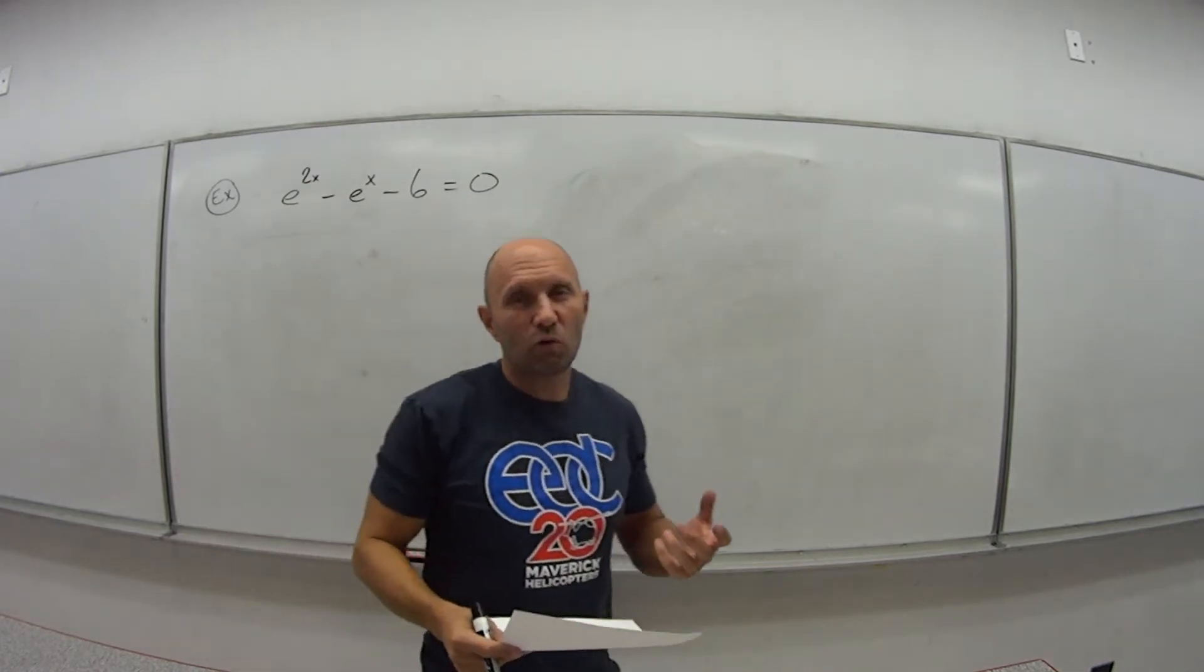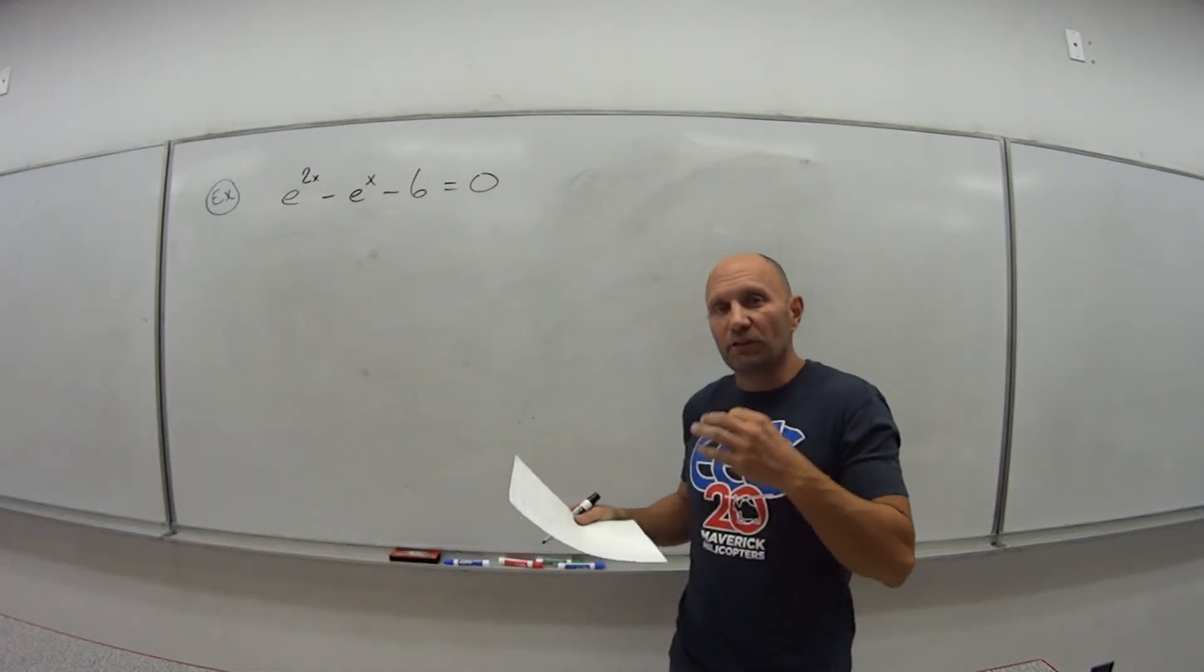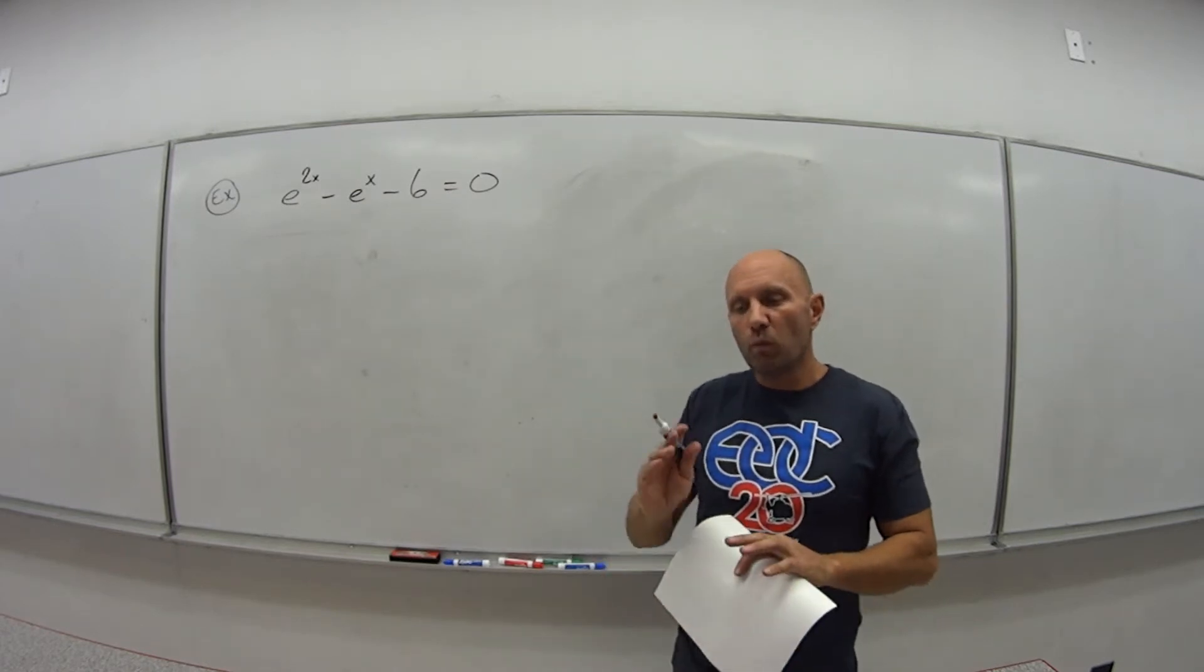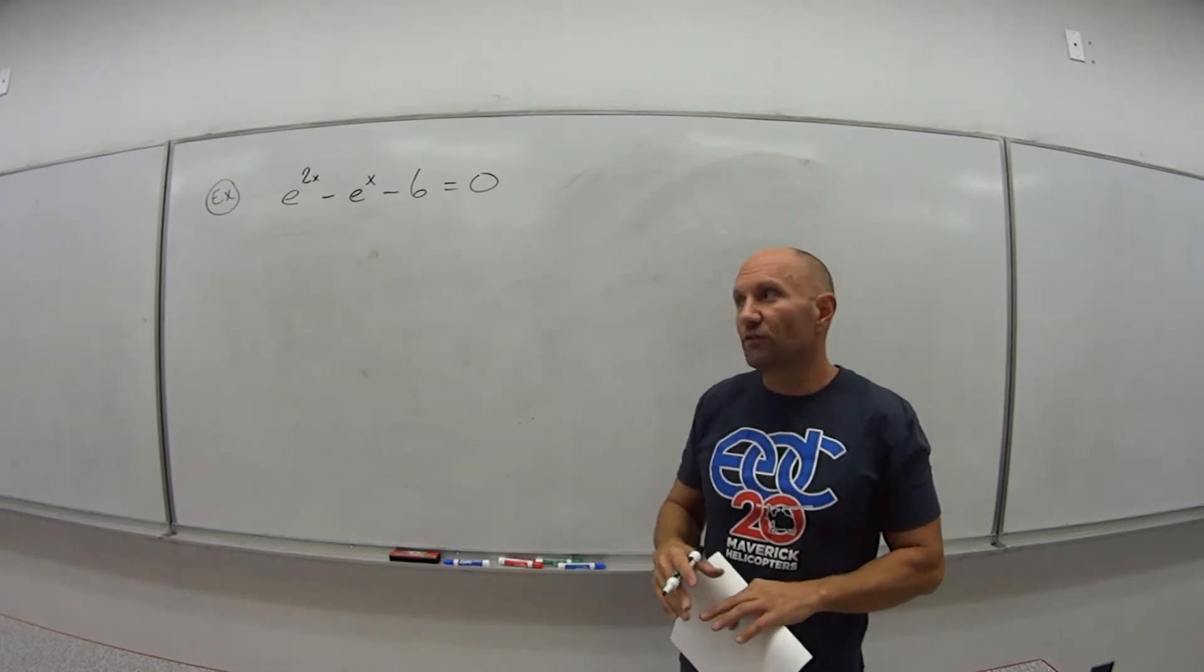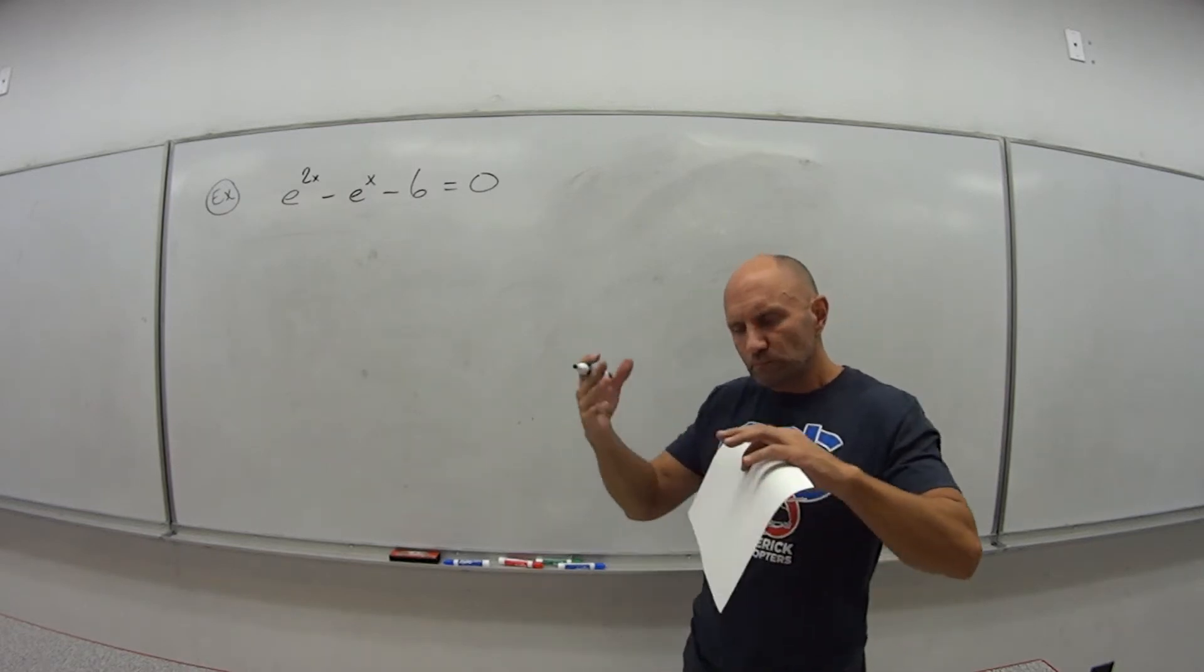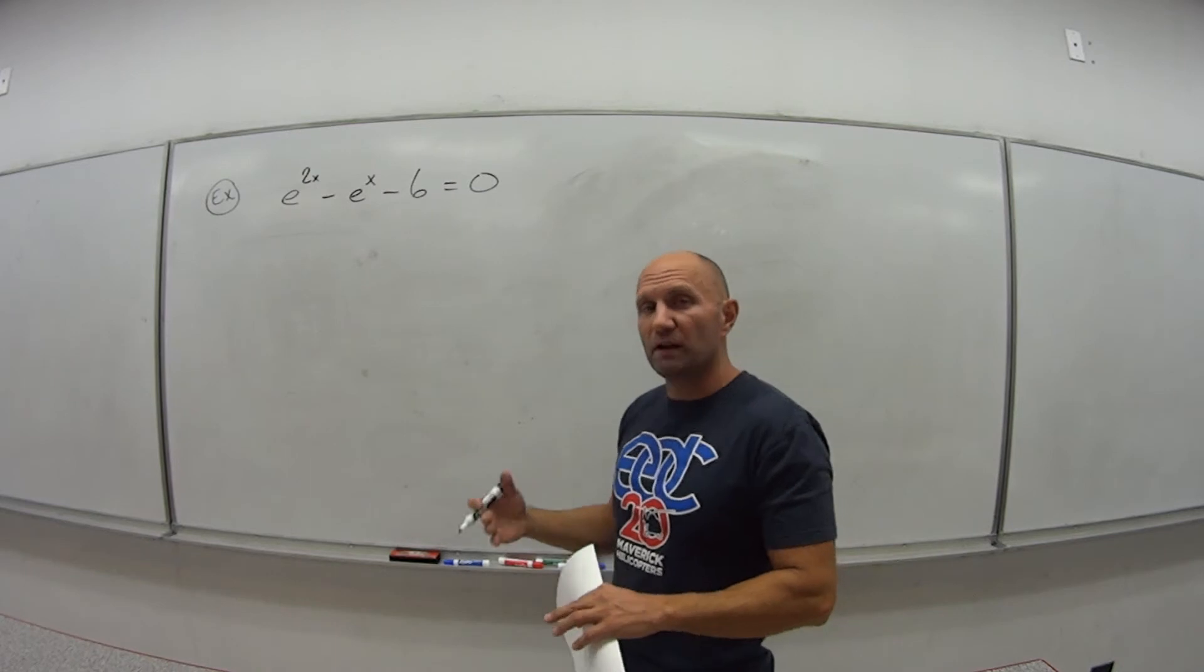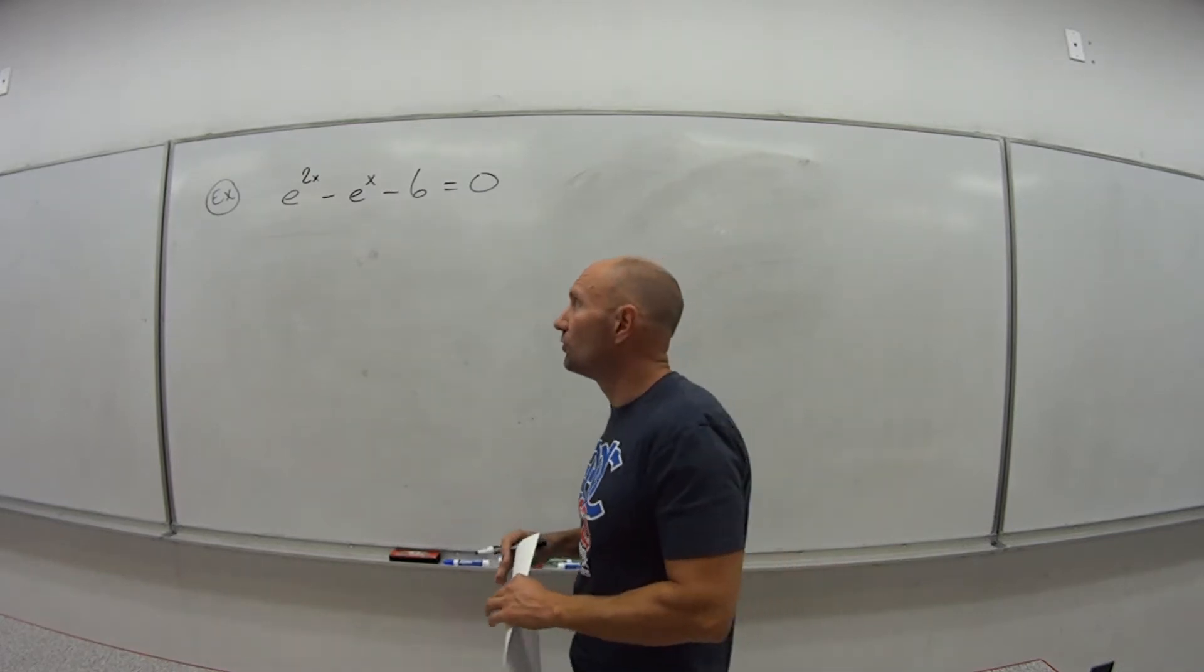So it's almost like a quadratic. It kind of looks like it. It's got three terms, it's set equal to 0. So when we had those situations, what did we do? We factored it. We tried to use zero property rule. We tried to factor it, and if it did, then we used zero property rule.